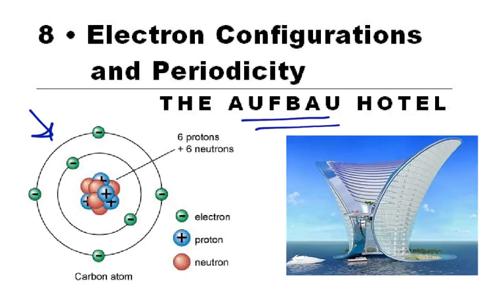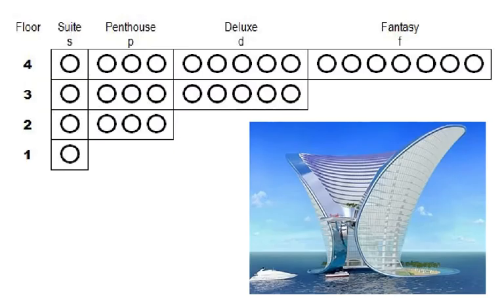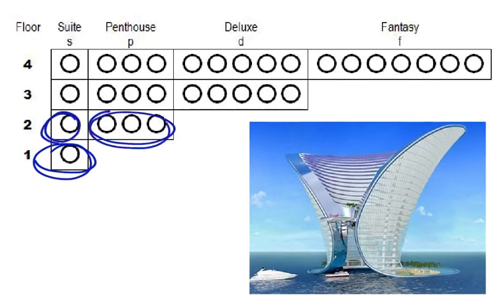Aufbau is a German word meaning 'to build up.' The hotel we're talking about is a very odd kind of hotel — it's kind of small on the bottom floors, and you get more and more rooms as you go higher and higher. On the first floor there is only one room, and that room is a suite. So we're going to call that a first floor suite.